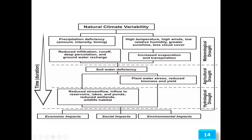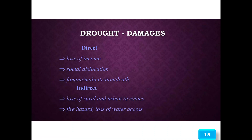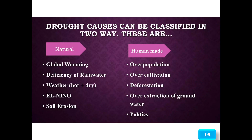For agricultural land, hydrological drought leads to soil water deficiency, plant water stress, and reduced biomass and yield. Hydrological drought also causes reduced streamflow, inflow to reservoirs, lakes and ponds, and reduced wetland and wildlife habitat, producing environmental impacts. Socially and economically, drought damages include direct losses such as loss of income, social disruption, famine, malnutrition, and death.